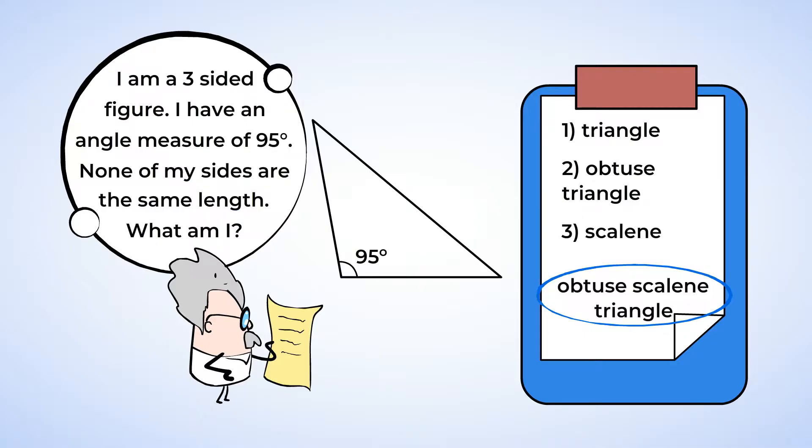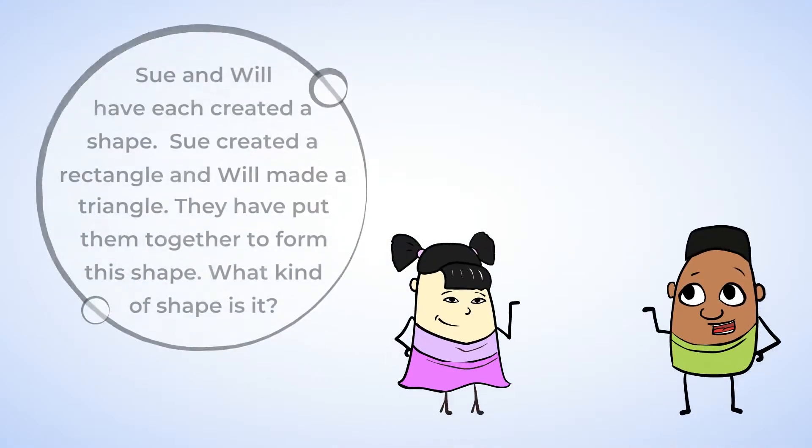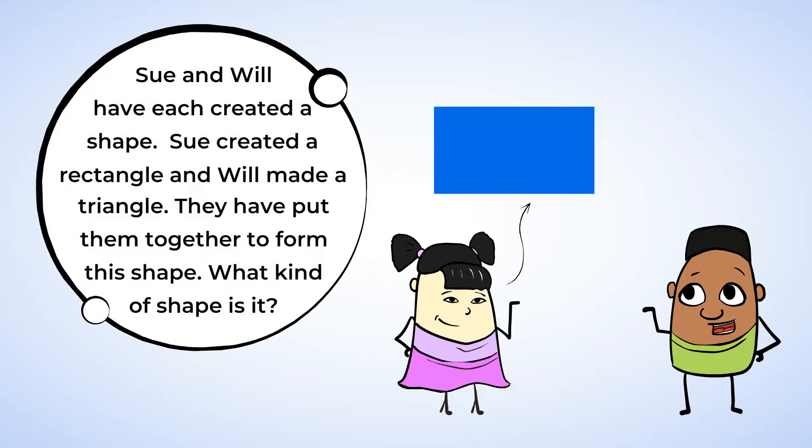Here comes the next riddle. Sue and Will have each created a shape. Sue created a rectangle and Will made a triangle. They've put them together to form this shape. What kind of shape is it? Let's classify it by its sides and angles.